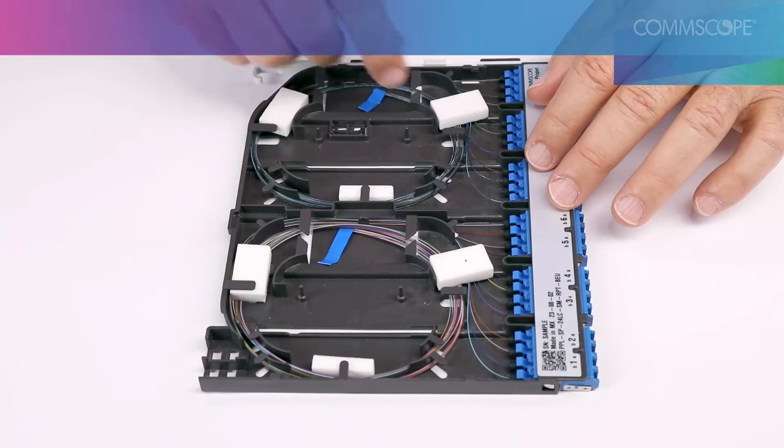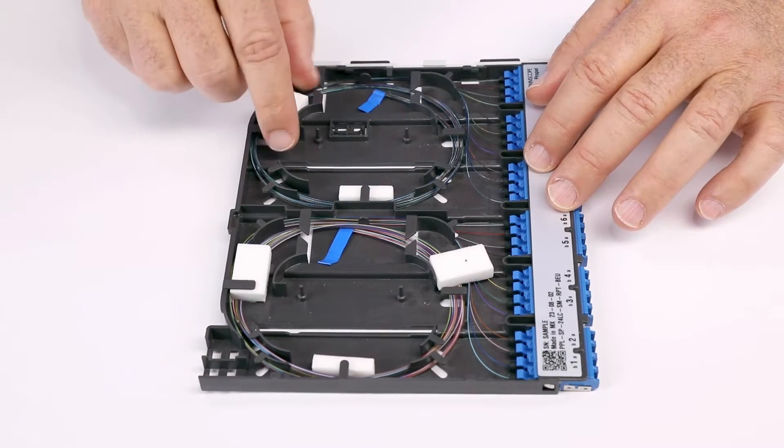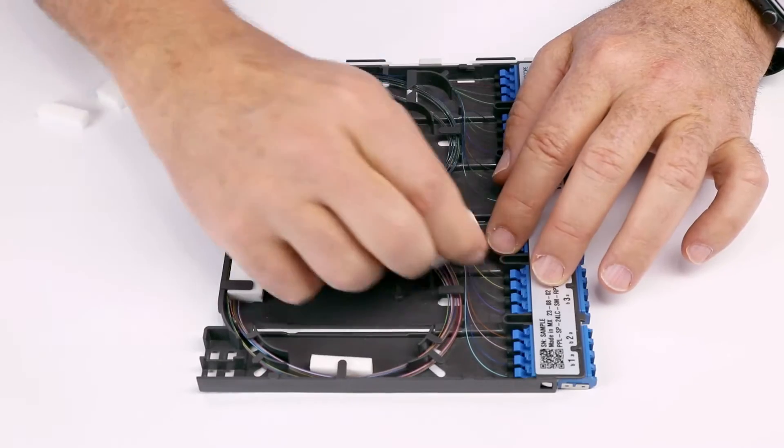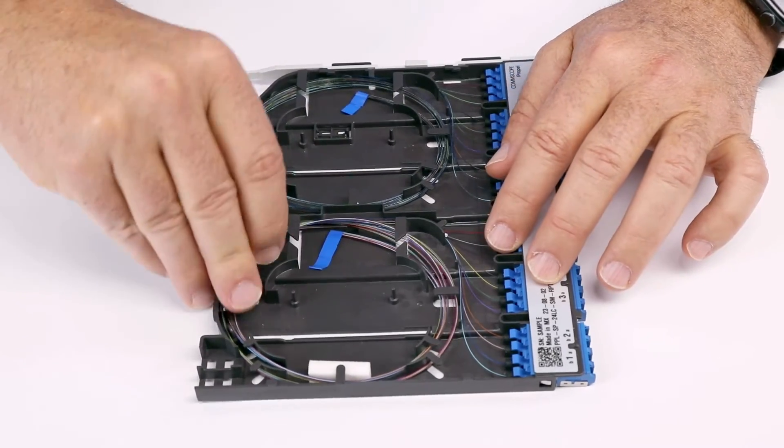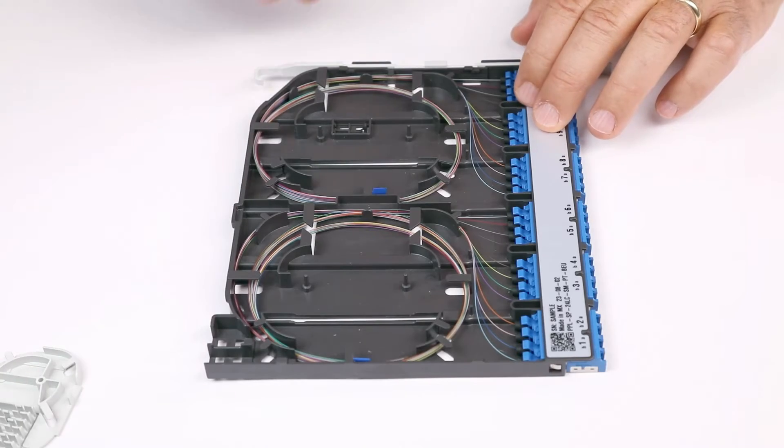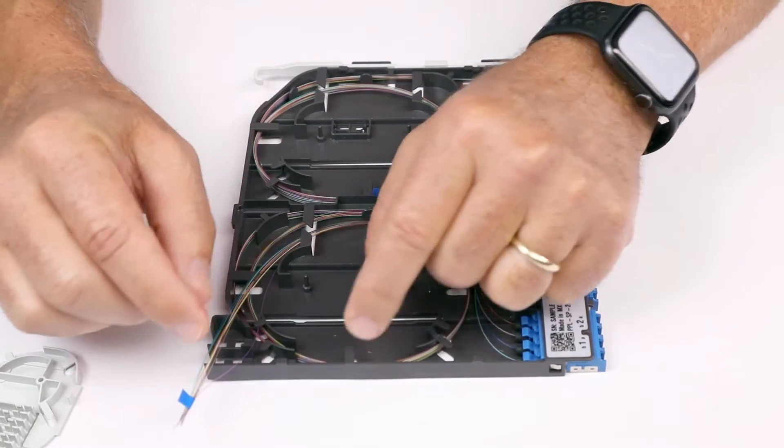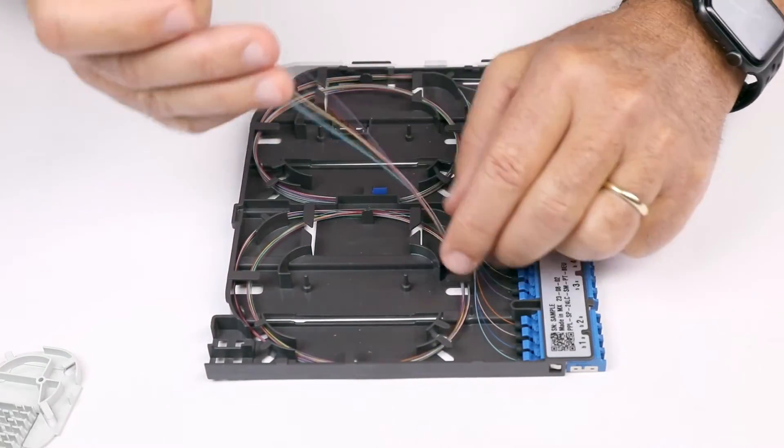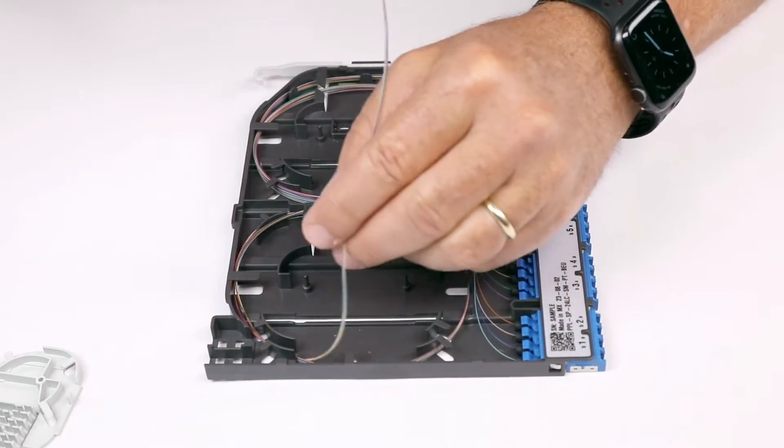Then remove and discard the foam blocks. Locate ends of pigtails marked with tape. Unspool and extend pigtail fibers beyond the front of the cassette.